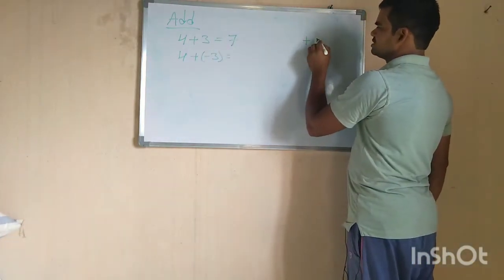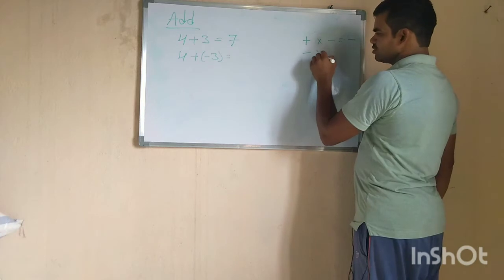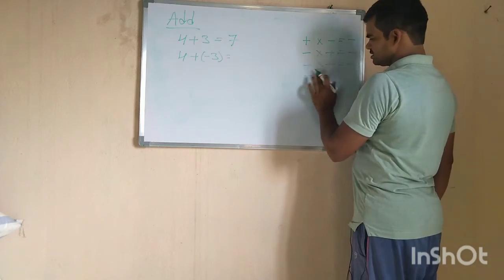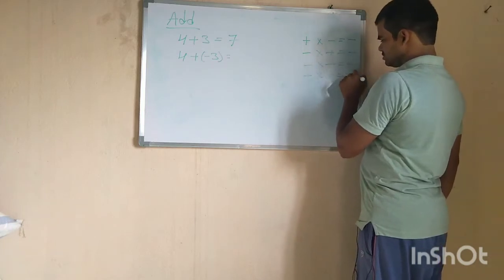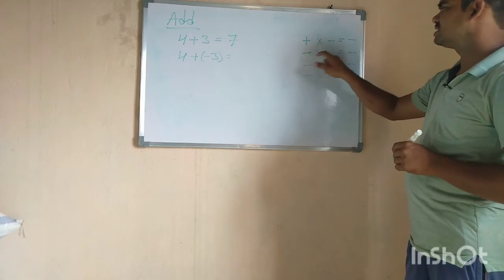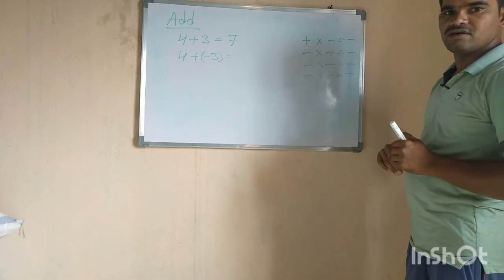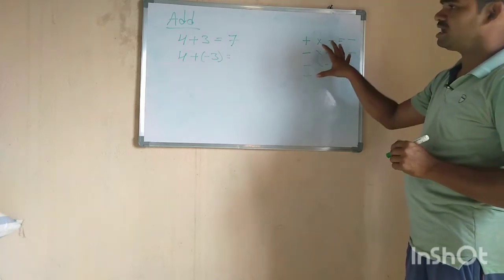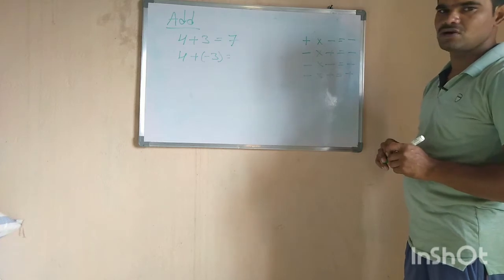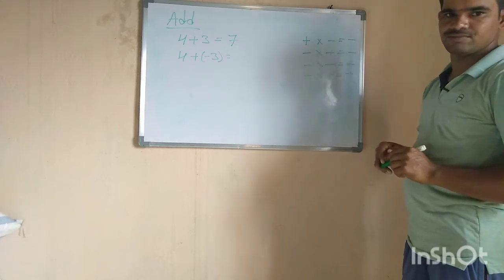When we are going to add or subtract integers, remember: plus times minus is minus, minus times plus is minus, minus times minus is plus, plus times plus is plus. This is the main set of rules we are going to use in addition, subtraction, or multiplication of integers. If both signs are the same, we are going to get a positive result.